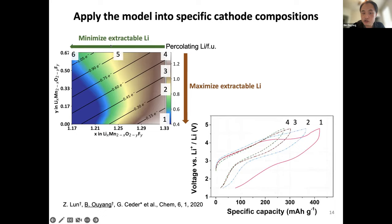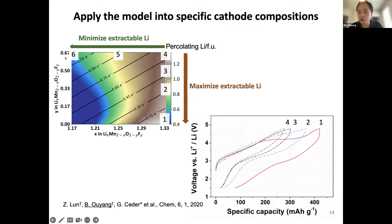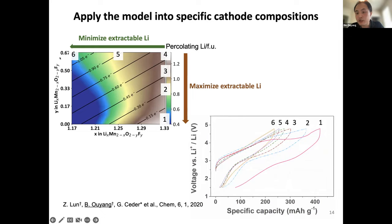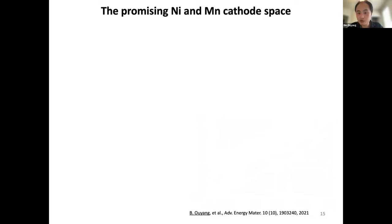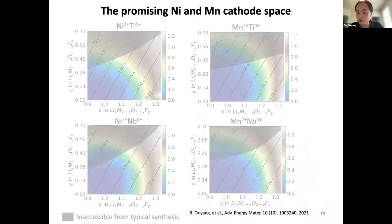This computational percolation map shows the color indicating how many lithium can percolate in the disordered structure, with X and Y as composition variables you can control. To verify this makes sense, we designed several groups of experimental samples at different compositions, made them into batteries, and cycled them to measure capacity. From prediction, samples 4 through 1 should have a monotonically increasing amount of extractable lithium, and in experiment we indeed see the initial capacity goes up monotonically, agreeing well with simulation.